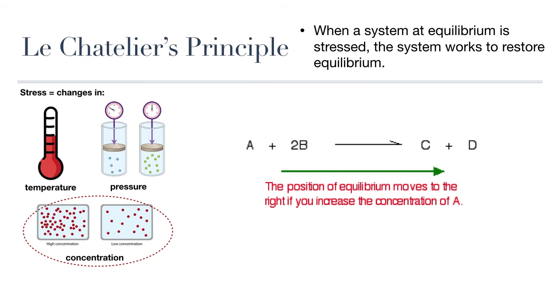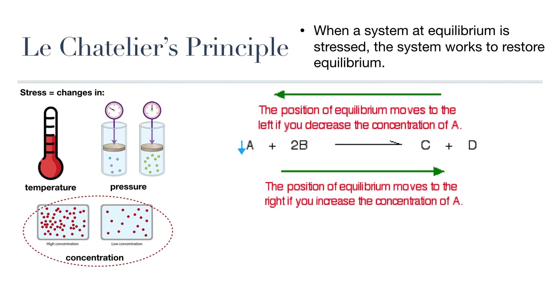If on the other hand all the A being produced is removed from the cell and the concentration of A is decreased, now in order to restore equilibrium, the equation will have to shift to the left in order to produce more A and establish equilibrium once again. So according to Le Chatelier's principle, in any reversible reaction that has established an equilibrium, any change in concentration will shift the reaction in the direction that will establish a new equilibrium.